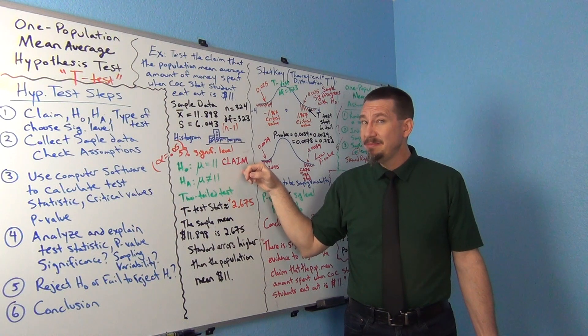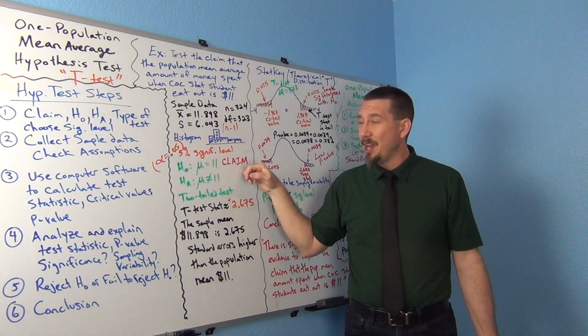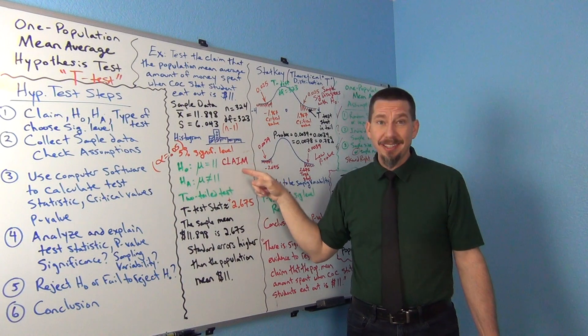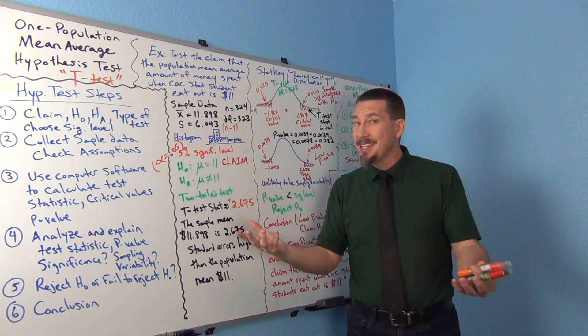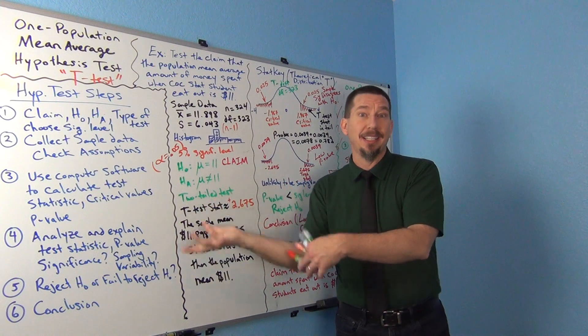I also rejected the claim. Does that make sense? I rejected the null, but the null was the claim. So I probably am going to say something about having evidence to reject the claim.